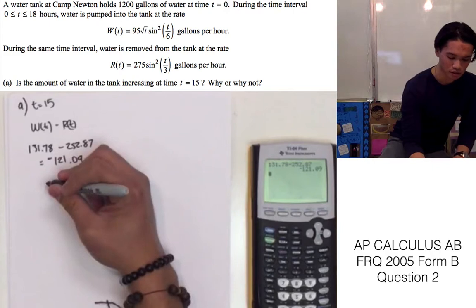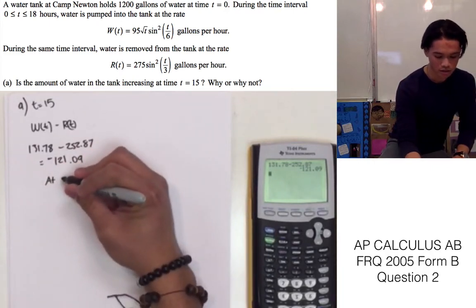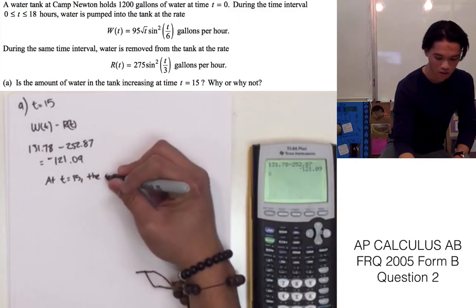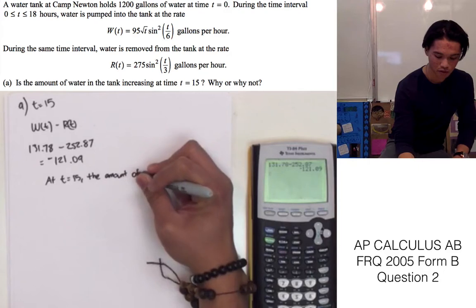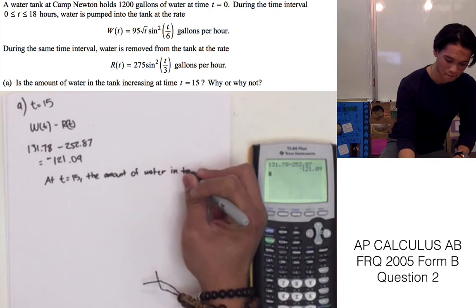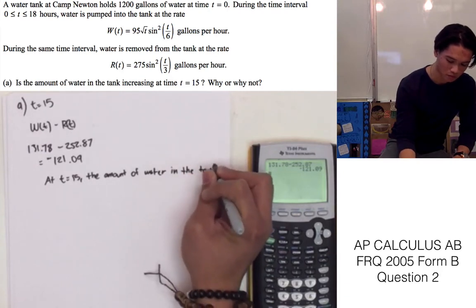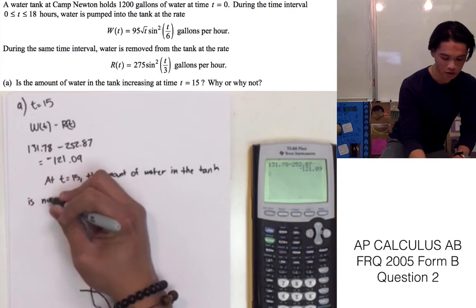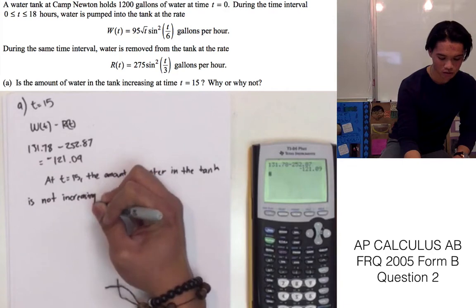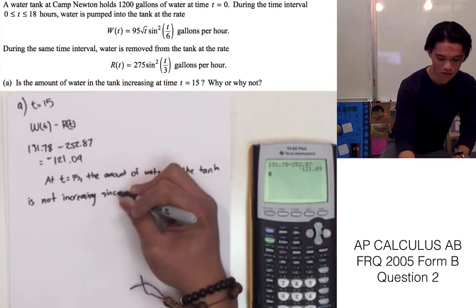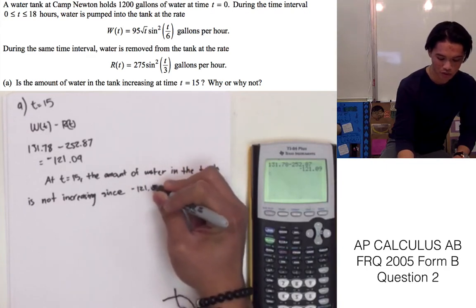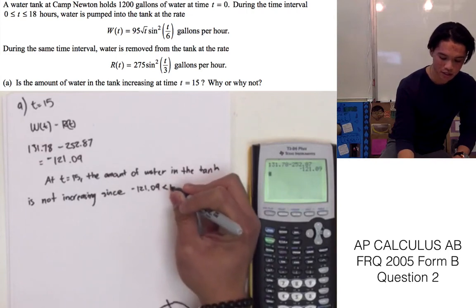So now we can answer the question. At t equals 15, the amount of water in the tank is not increasing, because negative 121.09 is less than zero.